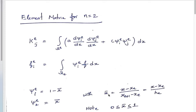At local node 2, x_bar equals 1 because x equals x_{e+1} there. We choose a local coordinate such that within the element this coordinate goes from 0 to 1 — integration is simpler this way. Now, psi_{e1} must have value 1 at local node 1 and value 0 at local node 2.